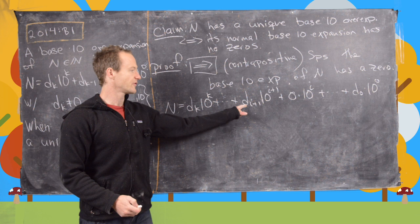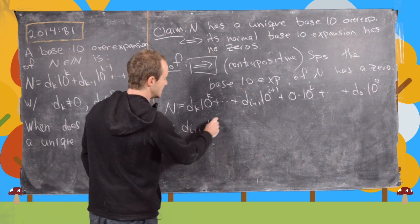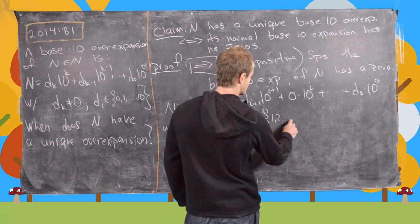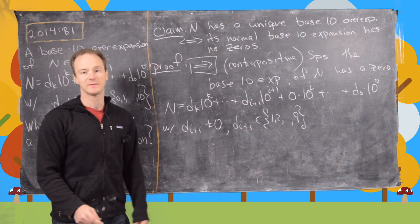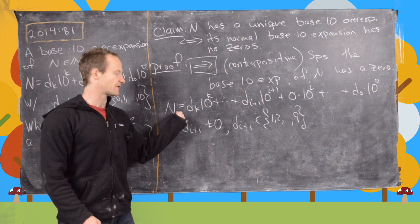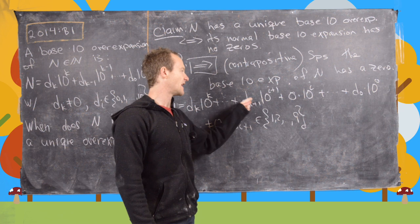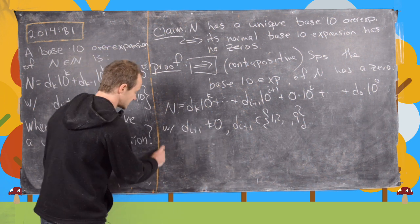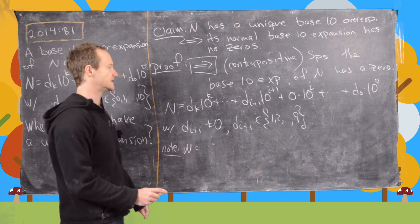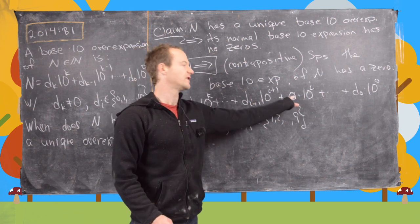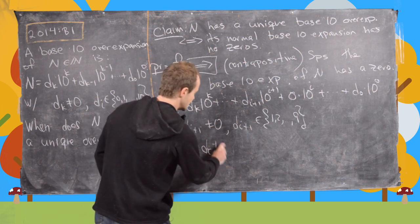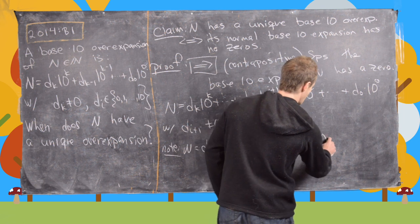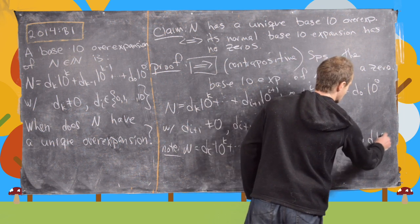We also assume d_{i+1} is not equal to 0 and is in {1, 2, ..., 9}. We can ensure this by starting from the left and finding the first zero. Since we want an over-expansion, we take one unit from d_{i+1} and move it into the zero spot, giving: d_k times 10 to the k plus (d_{i+1} minus 1) times 10 to the i+1 plus 10 times 10 to the i, all the way down to d_0 times 10 to the 0.